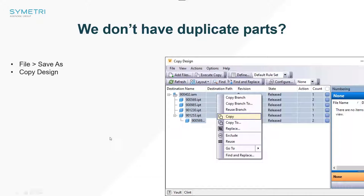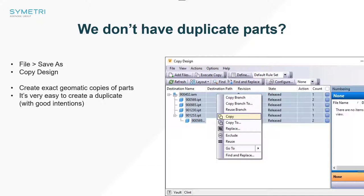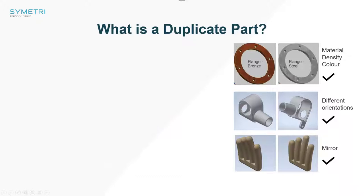It's quite easy to do, and generally what happens is designers don't even realize they're doing it. With all good intentions, they make a copy of an original assembly and copy some components with the intention of swapping them out later. What happens is project crunch comes, and all of a sudden a new machine is rolling down the line with about 30 new duplicates in there because there was no time to fix them or no tools for figuring out what was actually a geometric copy.